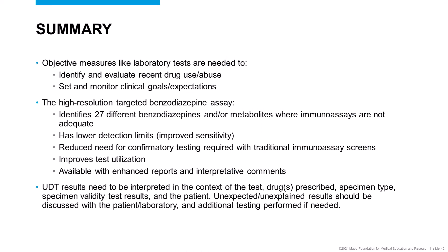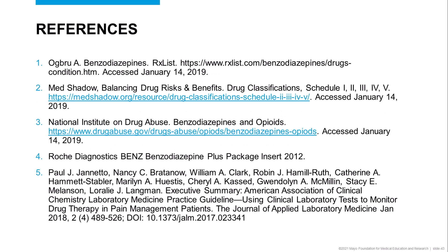In summary, objective measures like laboratory tests are needed to identify and evaluate adherence, misuse, or abuse of controlled substances. The high-resolution targeted benzodiazepine assay can identify 27 different benzodiazepines and/or metabolites where immunoassays are not adequate, improves specificity, has lower detection limits, improves sensitivity, reduces the need for confirmatory testing, improves test utilization, and is available with enhanced reports and interpretive comments. All urine drug tests must be interpreted in the context of the test, the drugs prescribed, specimen type, time since last dose, specimen validity results, and the patient. Unexpected results should be discussed with the patient and laboratory, and additional testing performed if needed. Thank you — please contact Mayo Clinic Laboratories with any questions.